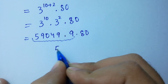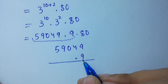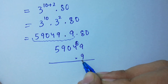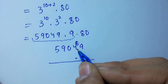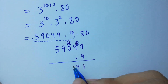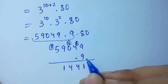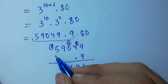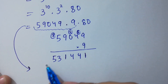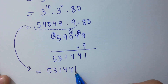Now we multiply 59,049 by 9: 9 times 9 is 81, write 1 carry 8; 9 times 4 is 36 plus 8 is 44, write 4 carry 4; 9 times 0 is 0, plus 4 is 4; 9 times 9 is 81, write 1 carry 8; 9 times 5 is 45, plus 8 is 53. So 59,049 times 9 equals 531,441. We now have 531,441 times 80.